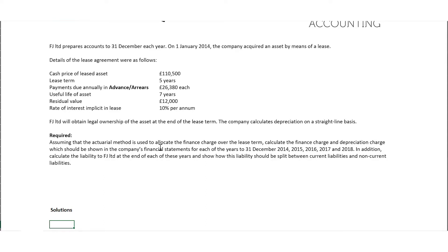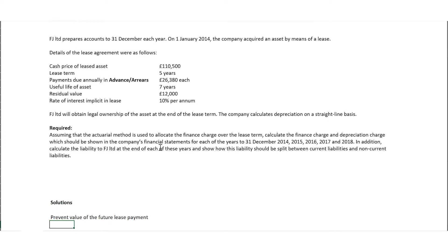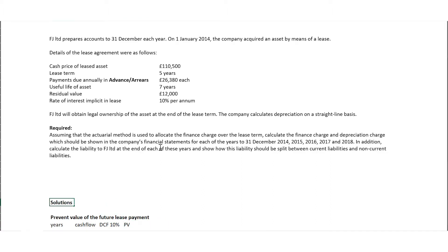So the first thing we have is the present value of the future lease payment — that's the first thing we want to calculate. To calculate the PV of the future lease payment, we have: years, cash flow — that's the installment that will be paid — the DCF, which is the discount factor at 10%, and we have the PV. I'm going to treat it first using advance, then later treat it again using arrears.